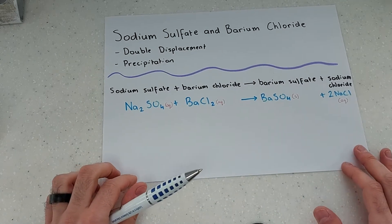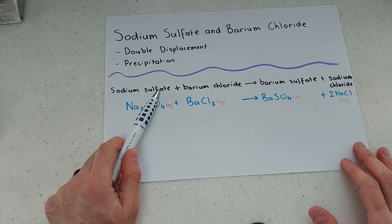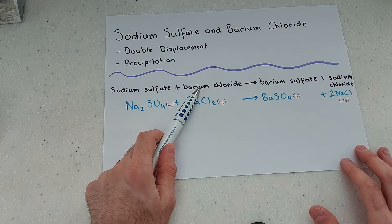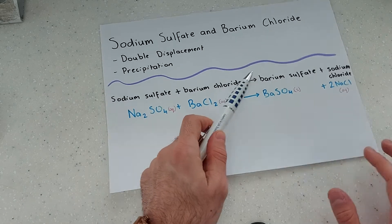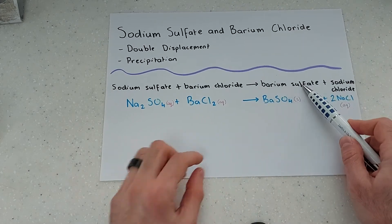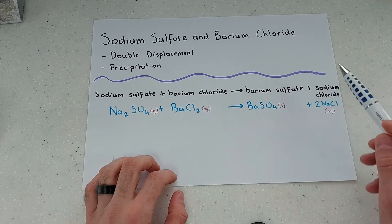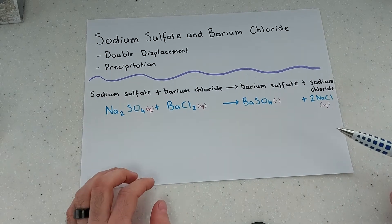The actual equation looks something like this. I've got sodium sulfate which is aqueous, it's a solution, plus barium chloride solution and a chemical reaction between them is going to occur and that's going to give me barium sulfate which will actually be the solid that is formed, the precipitate that is formed, and I'm also going to produce sodium chloride in the solution form.